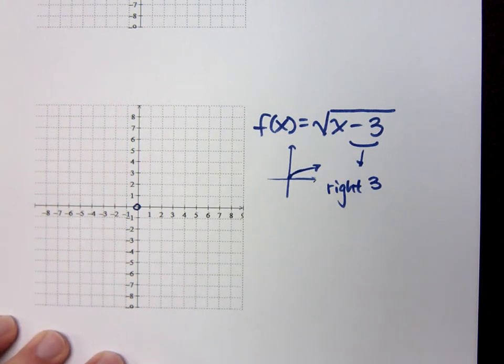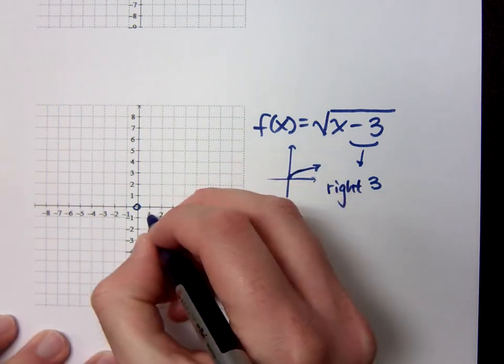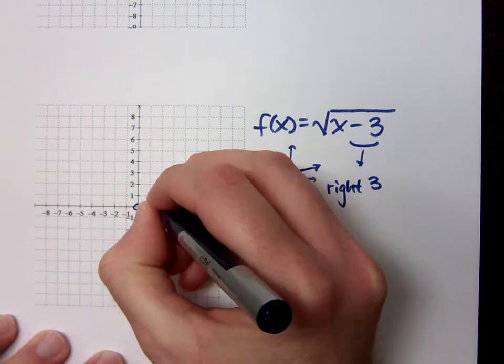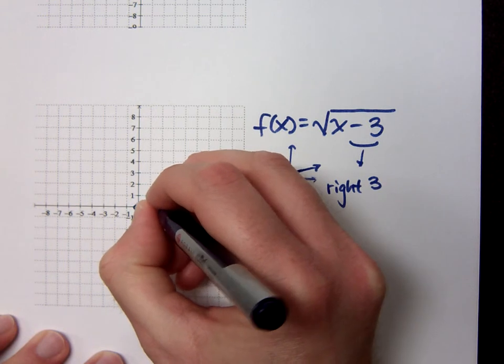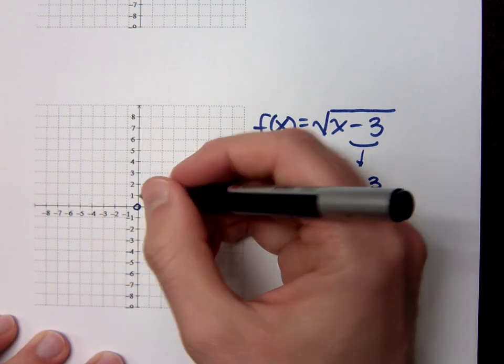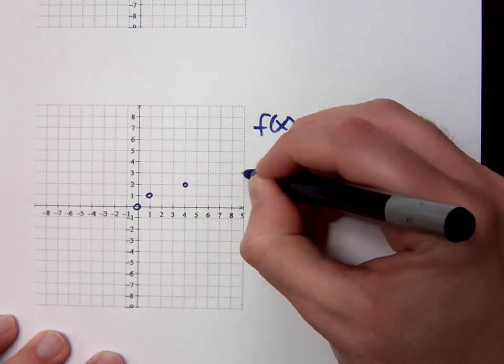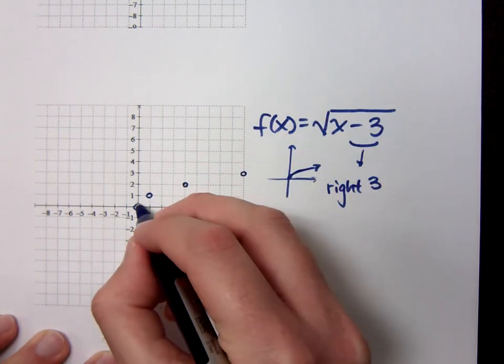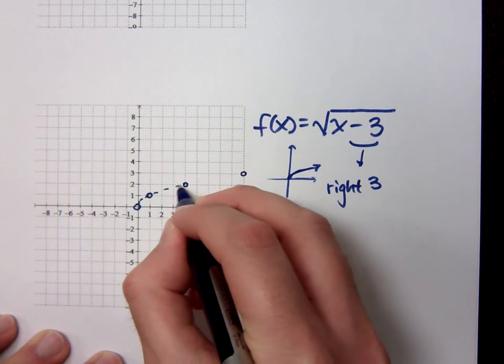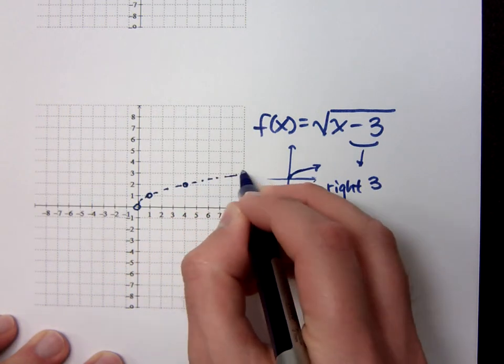When I'm looking at the square root function, I think about those values that gave me a perfect square. So 1 gave me a perfect square. The square root of 1 is 1, and that went where? The square root of 4 is 2. The square root of 9 is 3. These were my key points for the square root function.